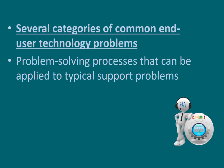Let's focus on the first objective: several categories of common end user technology problems. These come into eight common problem categories: hardware problems, software problems, network problems, user problems, security problems, documentation problems, vendor problems, and facilities and operating environments.